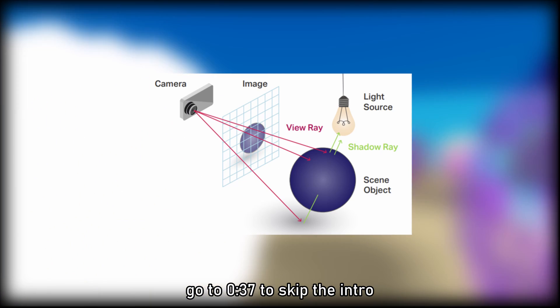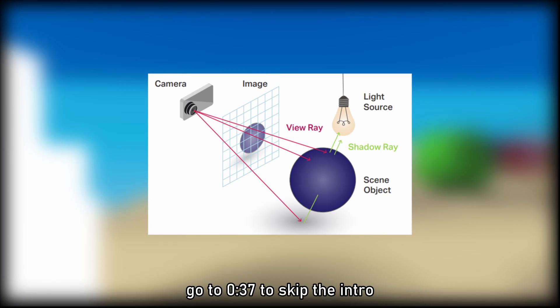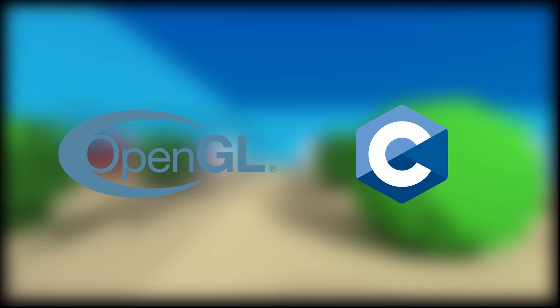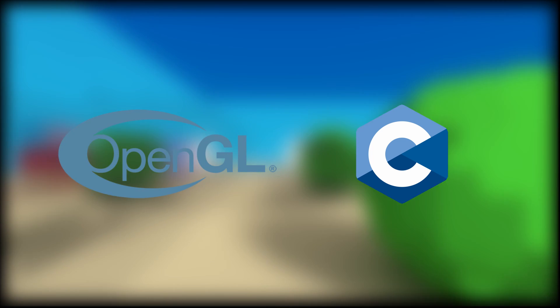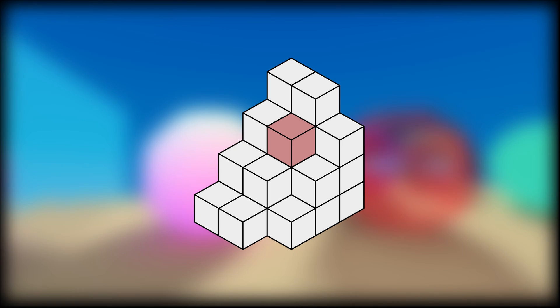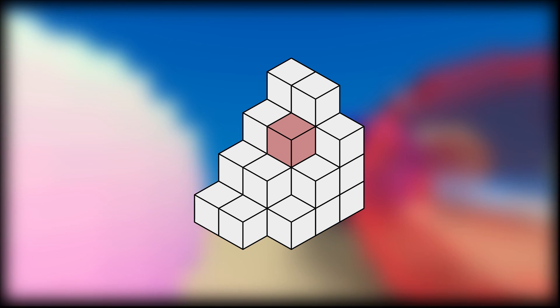Hey guys, for the past two months I've been working on a ray tracing engine using OpenGL and the C programming language. Unlike most ray tracing engines, mine renders everything using voxels, which are tiny cubes kinda like 3D pixels. This allows it to run at real time even on lower end computers, while still maintaining somewhat realistic lighting effects.